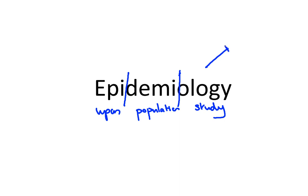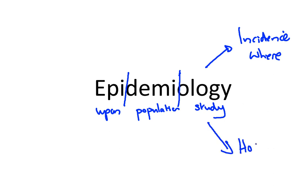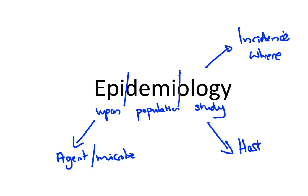In studying this, we would be interested in the incidence of the disease — that is, its occurrence, where it actually is. We would want to know who the hosts are, who is actually being affected by the disease. We would be studying the agent, which is the microbe. We want to know how the microbe gets from one person to another, which is the transmission. And finally, we would be considering methods of control.